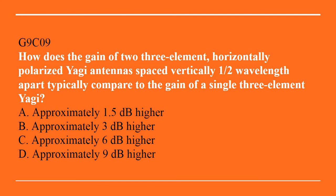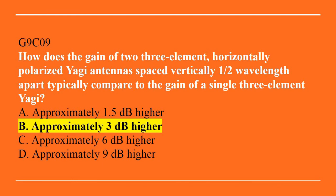G9C09: How does the gain of two three-element horizontally polarized Yagi antennas spaced vertically half-wavelength apart typically compare to the gain of a single three-element Yagi? A. Approximately 1.5 dB higher. B. Approximately 3 dB higher. C. Approximately 6 dB higher. Or D. Approximately 9 dB higher. The correct answer is B, approximately 3 dB higher.